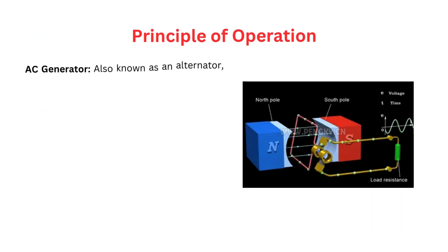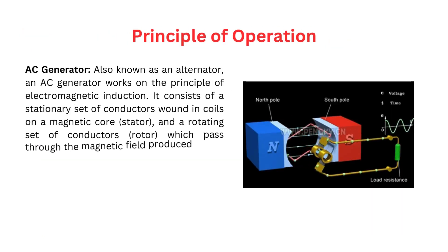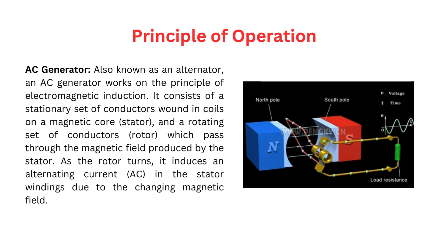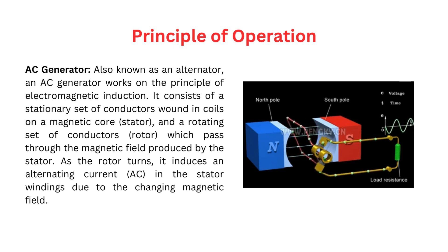Principle of Operation — AC generator. Also known as an alternator, an AC generator works on the principle of electromagnetic induction. It consists of a stationary set of conductors wound in coils on a magnetic core, called the stator, and a rotating set of conductors, called the rotor, which pass through the magnetic field produced by the stator.